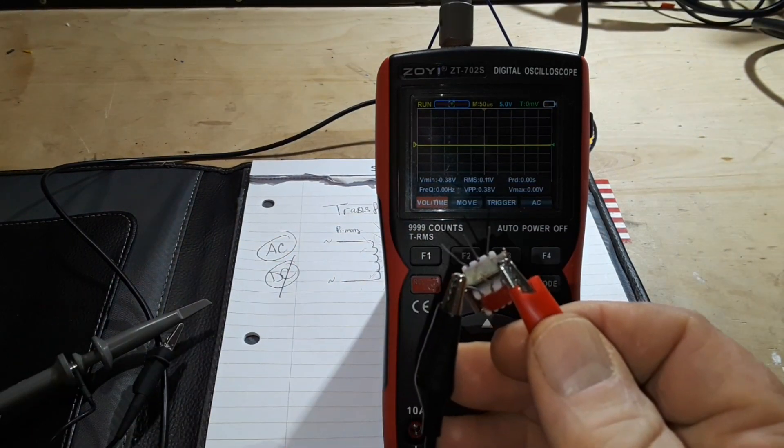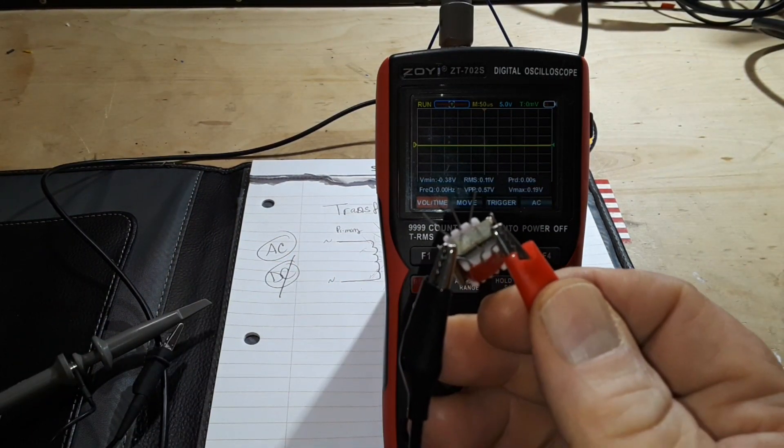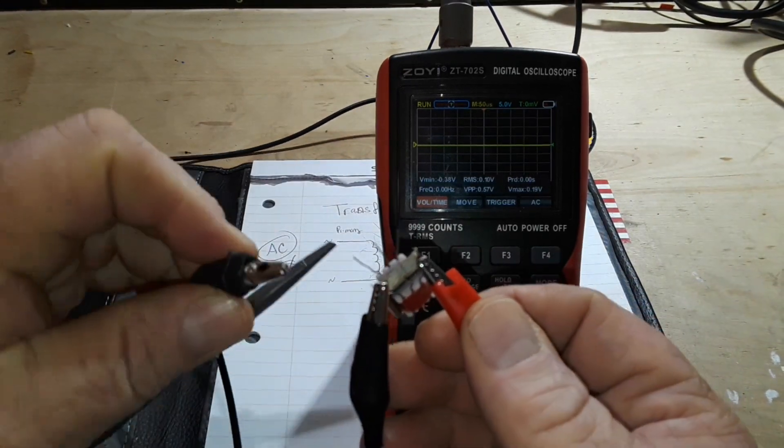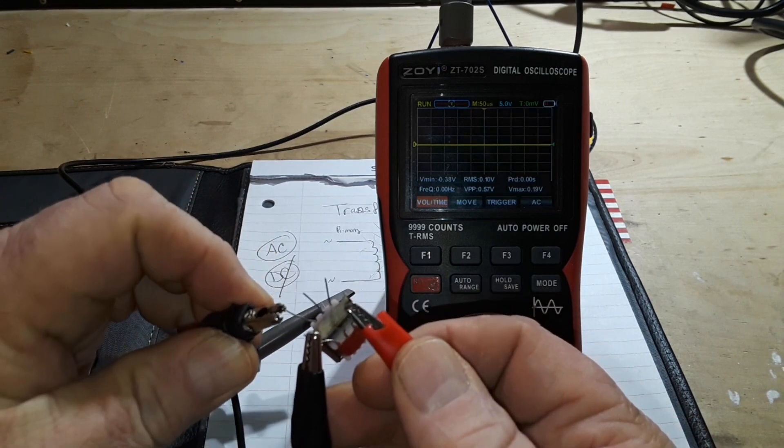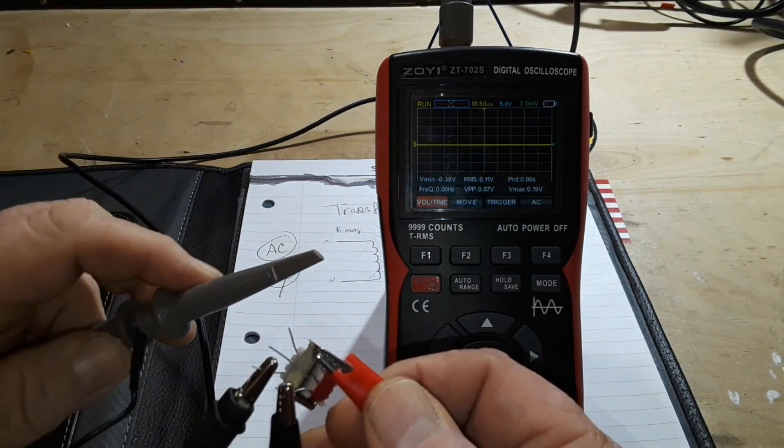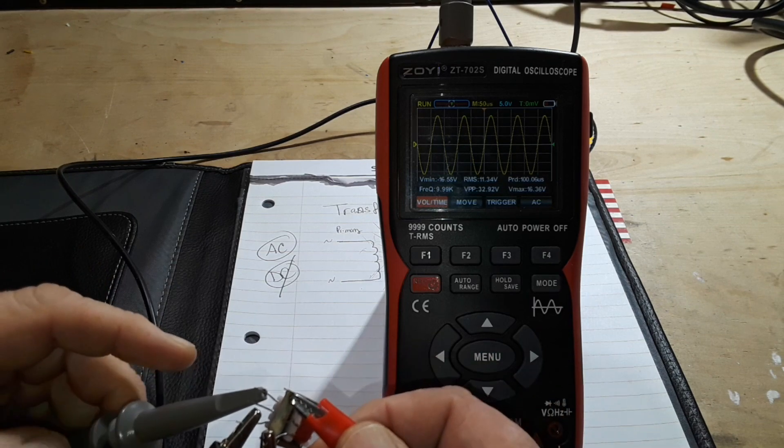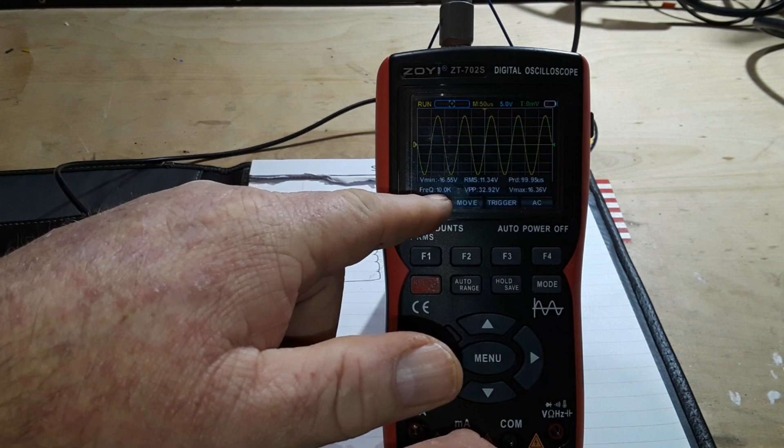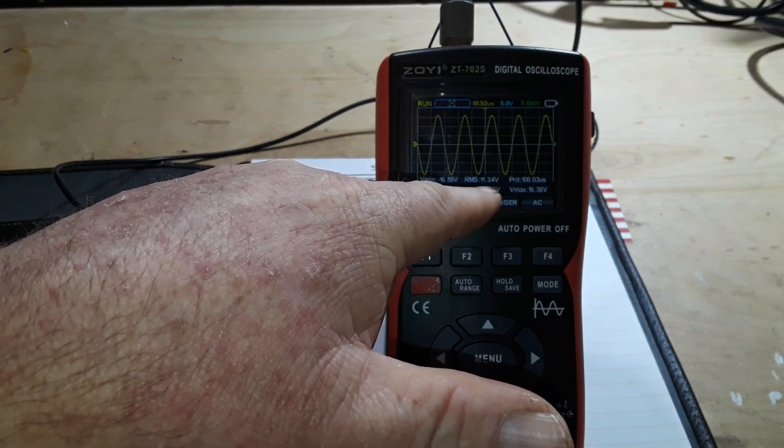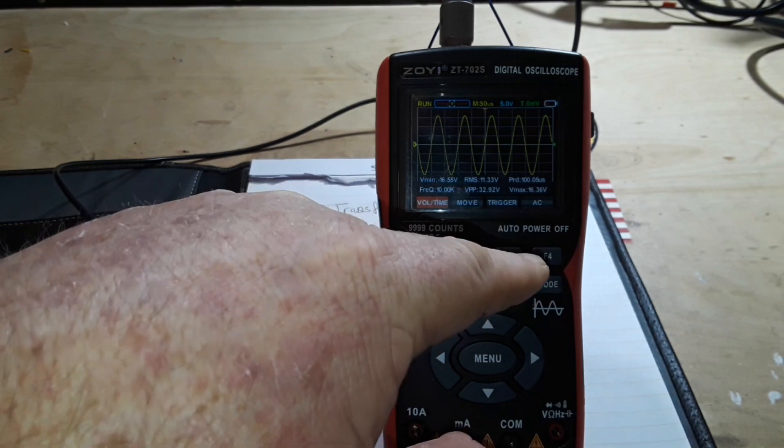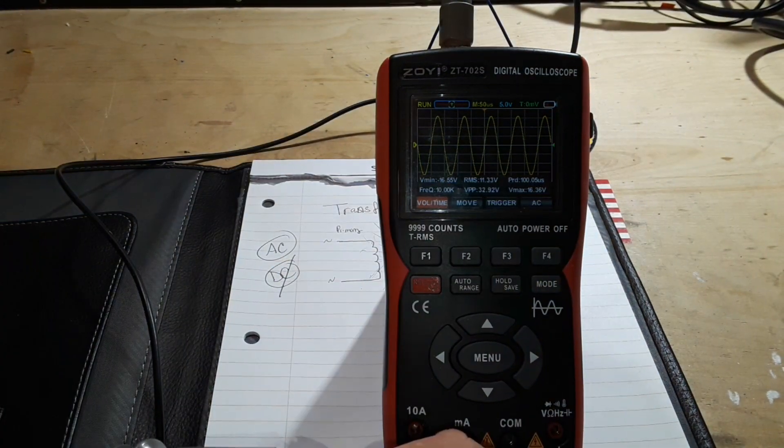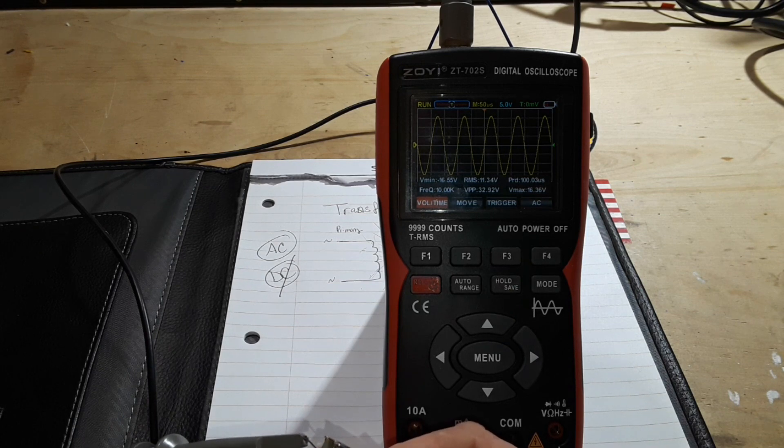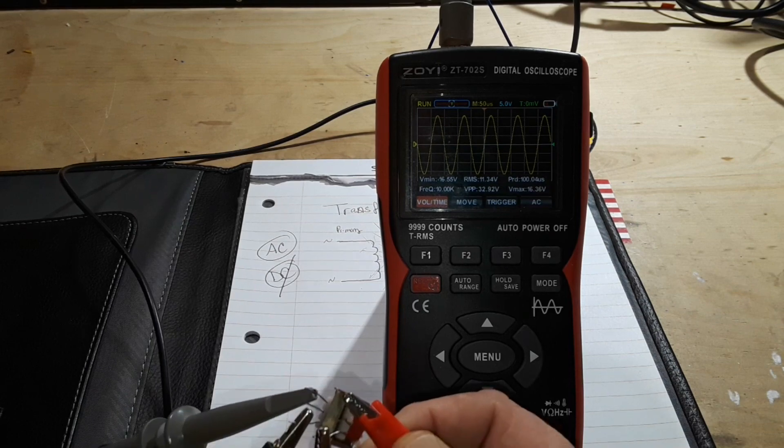So now we have connected that five volts peak to peak AC sine wave on here. Now, on the secondary side, we'll connect up the oscilloscope. And if you look now, you see we still have 10K frequency. But our RMS has gone from 1.63 volts to 11.33. And our peak to peak has gone from 5 to 32. If you want to do the math and figure out the percentage is changed, go ahead. It's far too early in the morning for me to do that.